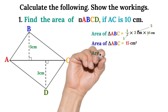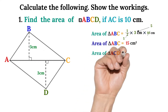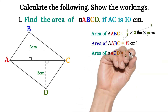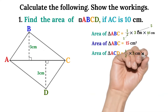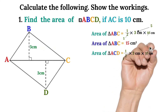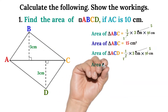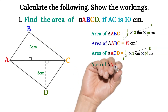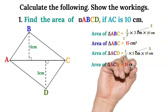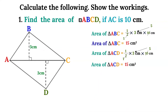Now the second part: area of triangle ACD is equal to one over two times three centimeters times ten. Two cancels itself once and then two cancels ten to five, so five times three will also give us 15 centimeters squared.